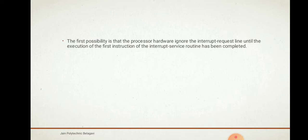The first possibility is that the processor hardware ignores the interrupt request line until the execution of the first instruction of the interrupt service routine has been completed. That is, suppose an interrupt has occurred and the processor is executing the interrupt service routine — the processor will ignore any other interrupt request line until the first instruction of that interrupt service routine has completed, at which point it will accept another interrupt request.